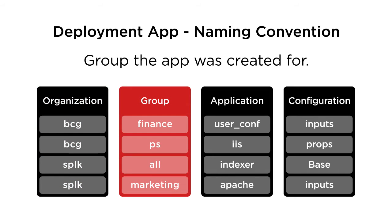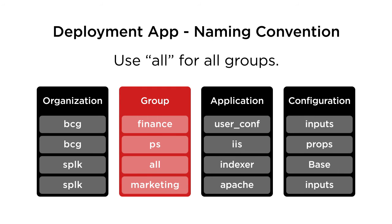Group is the group the app was created for. Examples might be the department, office, or team, like marketing or research. If all groups will be using the app, you can use "all".